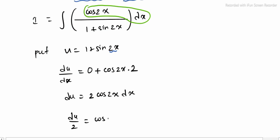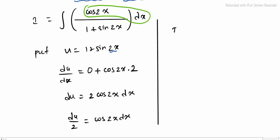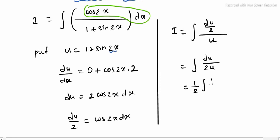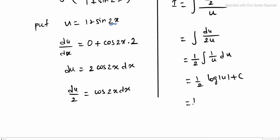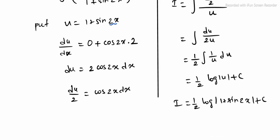So i equals the integral of (du/2) divided by u, which is (1/2) integral of 1/u du. This gives (1/2) log|u| + c. Replacing u with its value: (1/2) log|1 + sin 2x| + c. This is the Sub-question 5 integrate value.